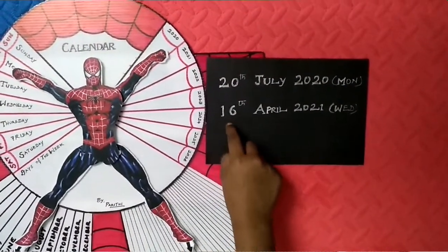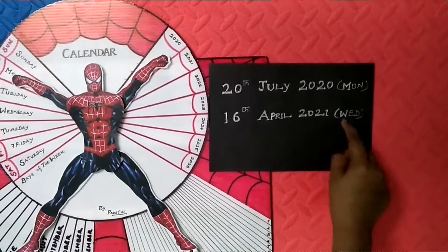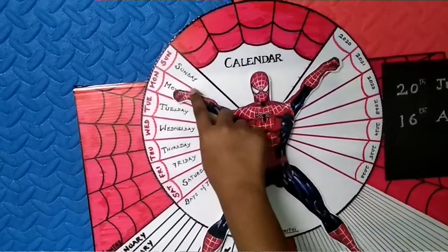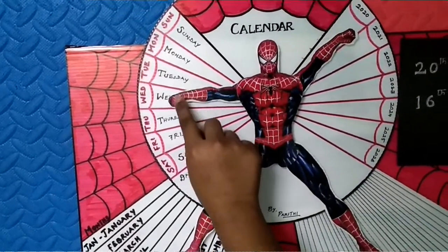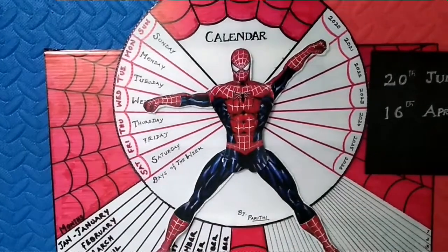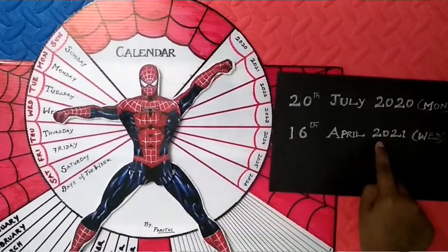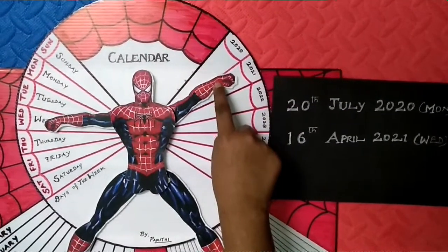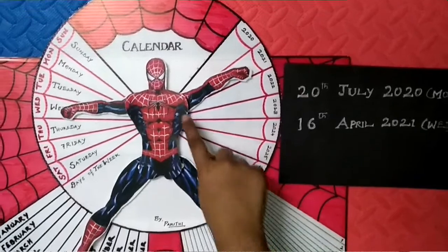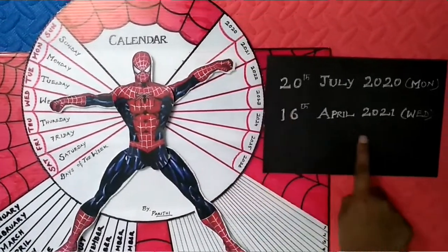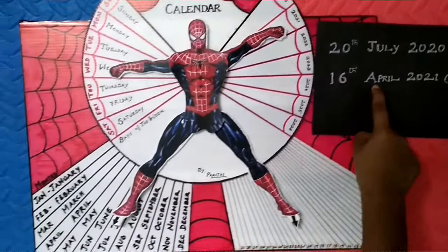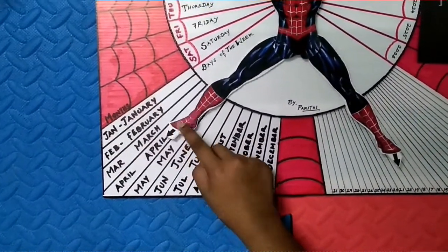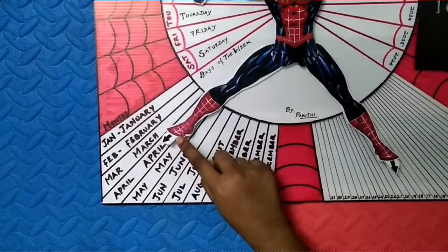The second example is 16th April 2020, Wednesday. Let's go to Wednesday — it's Wednesday over here. We have to move the right hand to the year 2020. And April — it's the month. We have to move the right leg for the month.